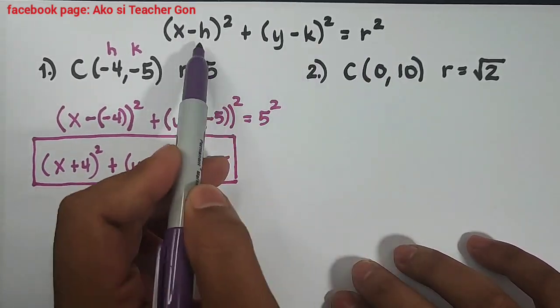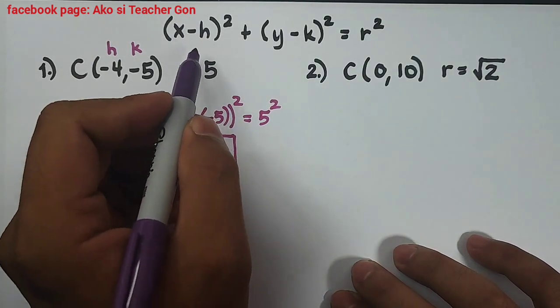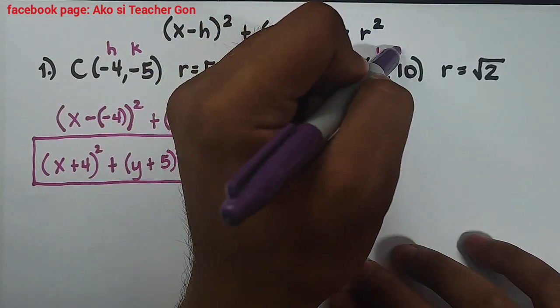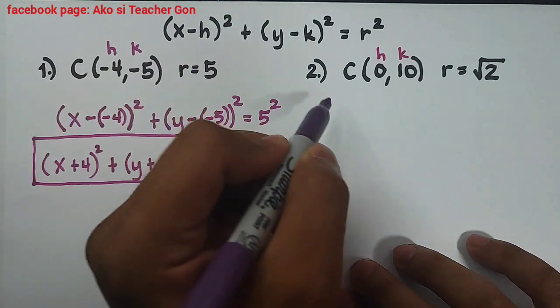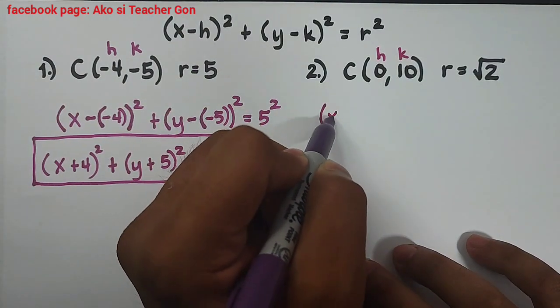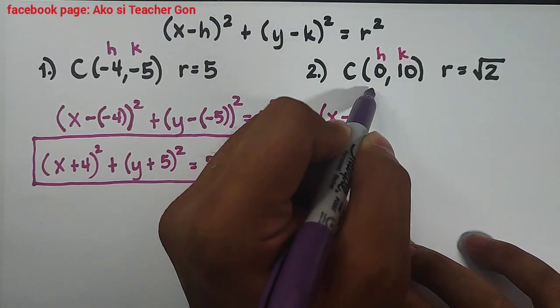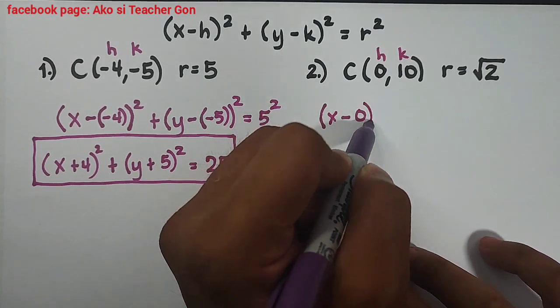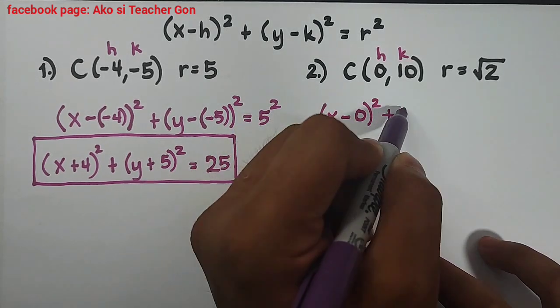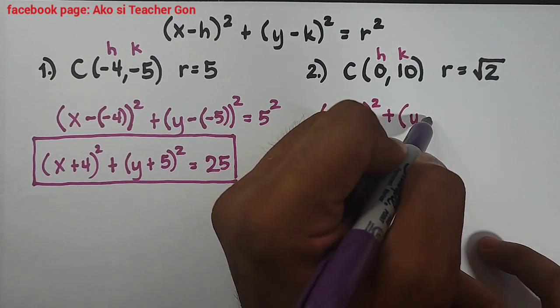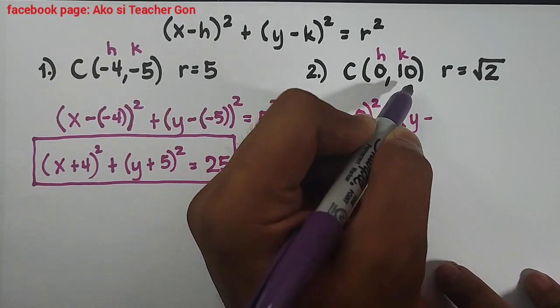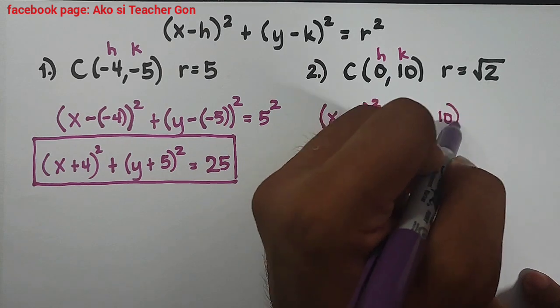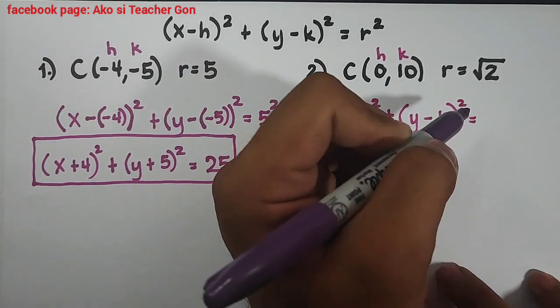Same pattern, we will use this. Let's plug in the value of your h and this is your k. So we have the quantity of x minus 0 because your h is 0, square, plus the quantity of y minus your 10 which is the value of k, 10 square, is equal to 2, your r is square root of 2, square root of 2, and then don't forget to raise it to the second power.